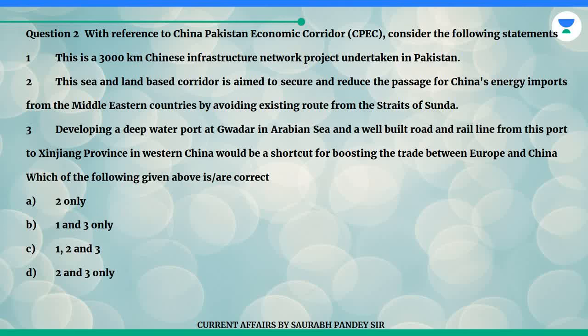Three: Developing a deep-water port at Gwadar in the Arabian Sea and a well-built road and rail line from this port to Xinjiang province in Western China would be a shortcut for boosting trade between Europe and China. Which of the following given above is correct? A. 2 only. B. 1 and 3 only. C. 1, 2 and 3. D. 2 and 3 only.